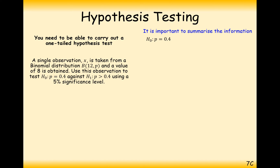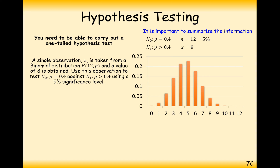We're looking at whether the training has worked or not. We've given 95% range of variation, so the other 5% is considered highly improbable. If the probability of scoring 8 or more is less than 5%, we accept the alternative hypothesis that the probability has increased. If more than 5%, it's still probable enough at P = 0.4 — we have to allow some variation in the data.